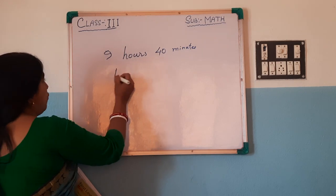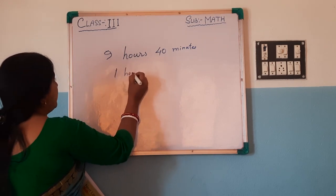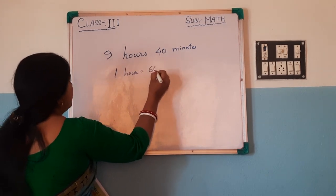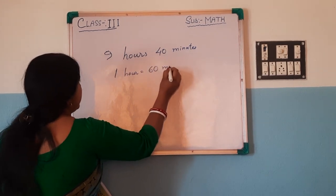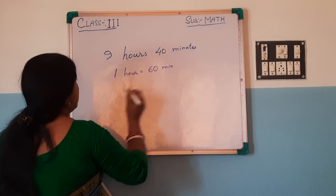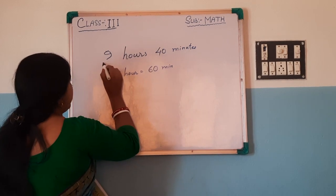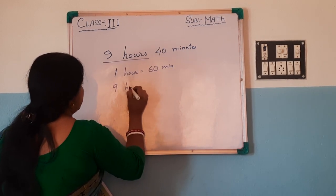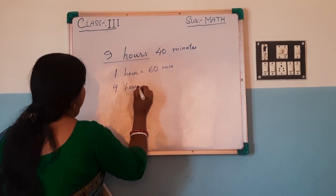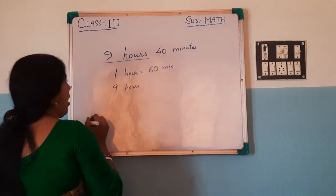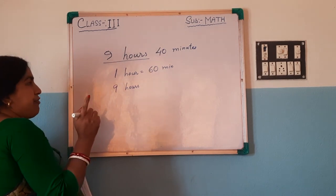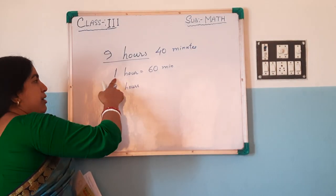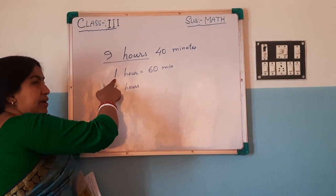Same process: 1 hour is equal to 60 minutes, so first convert 9 hours. Be careful while writing because 1 is singular.